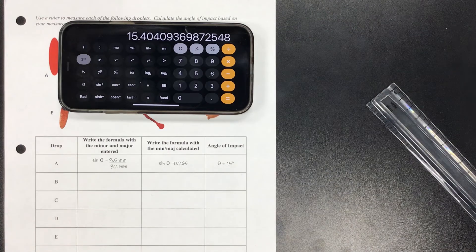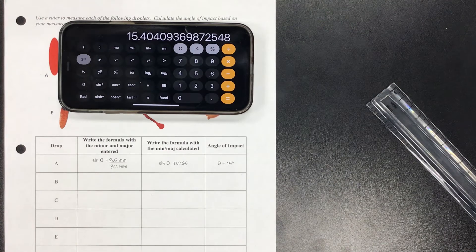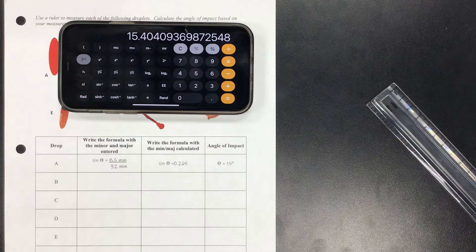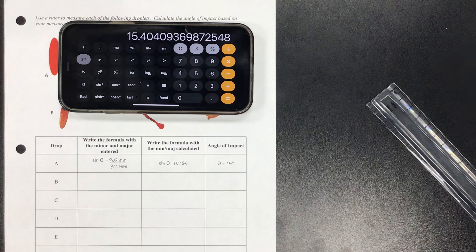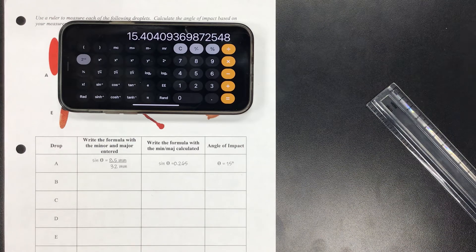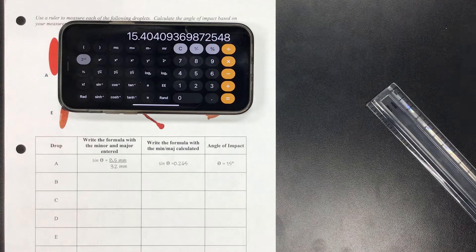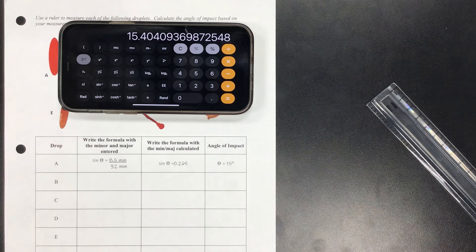So I've got 15.4040936... When we do degrees and angle of impact I only need you to go to the nearest whole degree, so we're going to take 15.4 and we're going to call it 15 degrees, and we're just going to write in 15 degrees here.